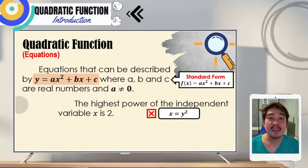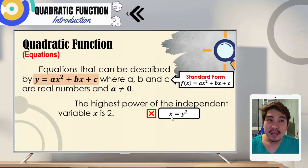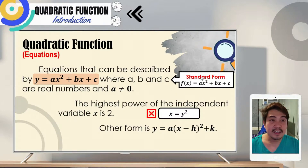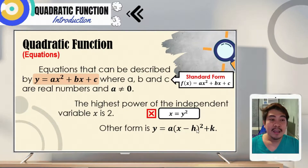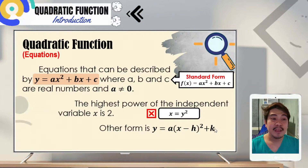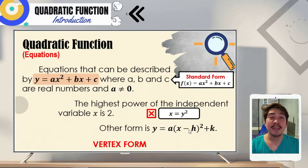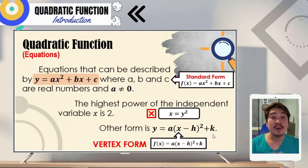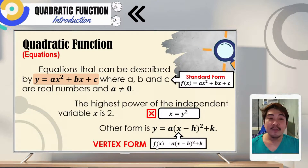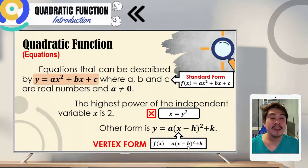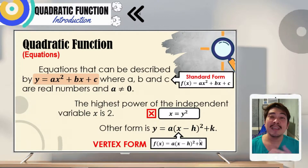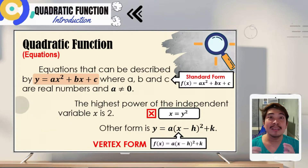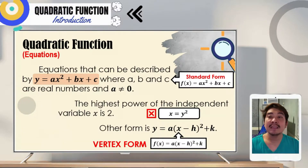How about if we are given x is equal to y squared? It is not a quadratic function since the exponent of x here is 1. The other form of quadratic function, aside from the standard form, is y is equal to a times the square of the binomial x minus h plus k. This is called the vertex form of the quadratic function, which can also be written as f of x is equal to a times the square of the binomial x minus h plus k. Since it is a quadratic function, we consider both variables x and y.